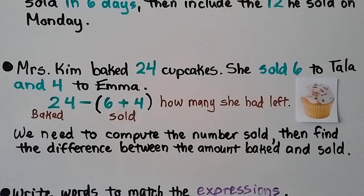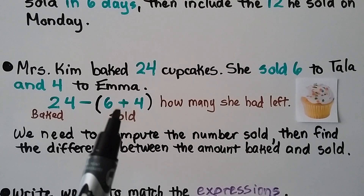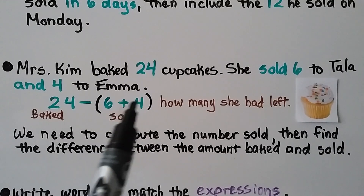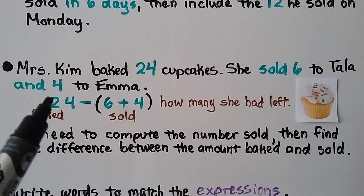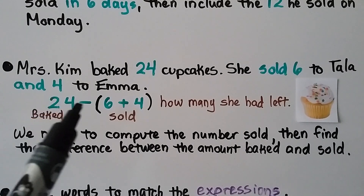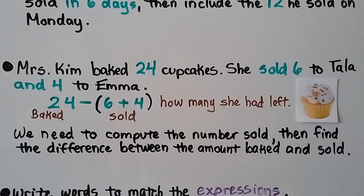Mrs. Kim baked 24 cupcakes. She sold 6 to Tala and 4 to Emma. We add the 6 plus 4 that she sold in parentheses, then perform 24 minus the amount she sold. That's how many she had left. We need to compute the number sold first, then find the difference between the amount baked and sold. We do what's in the parentheses first.